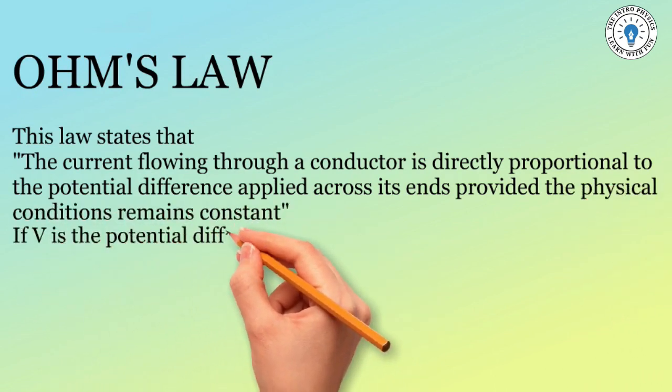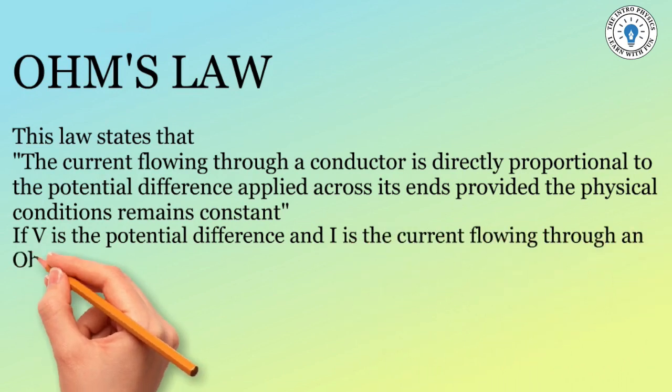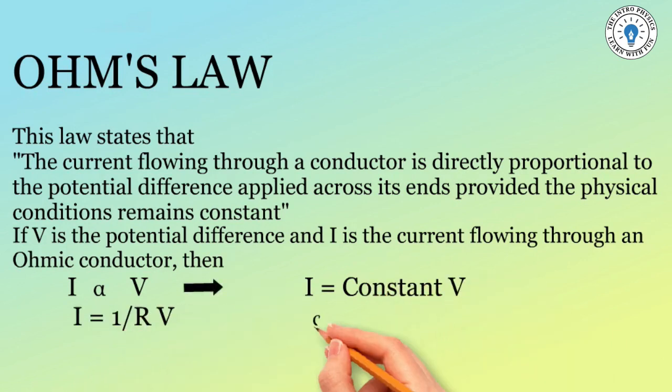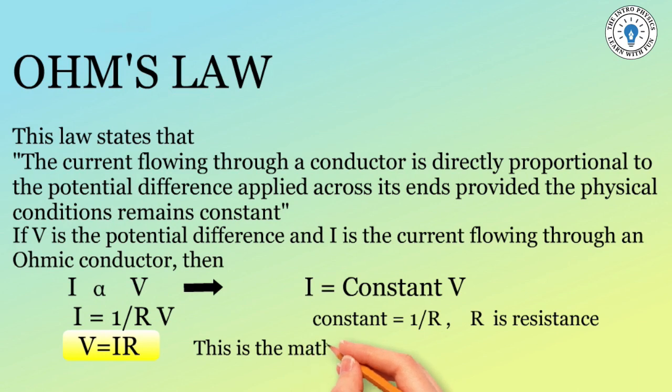If V is the potential difference and I is the current flowing through an ohmic conductor, then I is directly proportional to V, which follows that I equals constant times V. I equals one over R times V, where the constant is one over R. R is the resistance of the conductor. V equals I R. This is the mathematical form of Ohm's law.